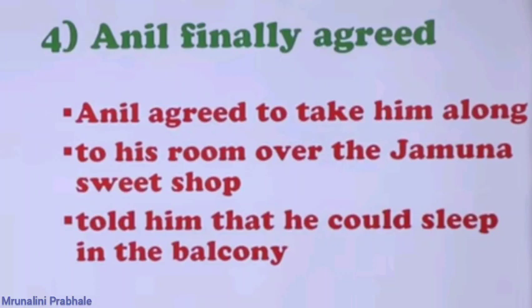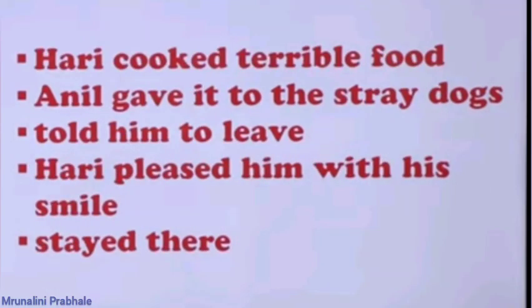Anil's room was over Jamuna's sweet shop, and he told Hari he could sleep on the balcony. The next day Hari cooked a terrible meal, and Anil gave it to a stray dog. He told Hari to leave since he didn't know how to cook, but Hari was too experienced and pleased him with a smile, and so stayed on.